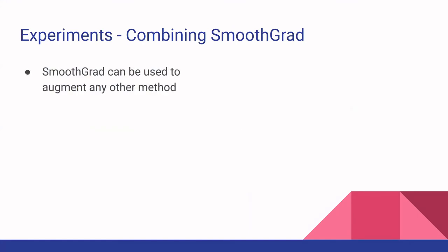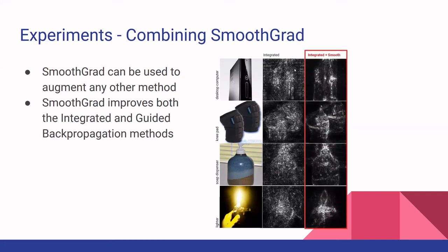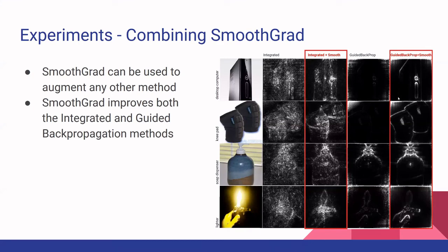They also proposed combining their method with other methods as a type of augmentation. Using images of a desktop, knee pads, soap dispenser, and lighter — the first two with uniform backgrounds — integrated alone is noisy, but combining it with SmoothGrad removes the noise around uniform backgrounds and clearly reveals the desktop computer, knee pads, soap dispenser, and lighter. For guided backpropagation, the first two uniform background images are barely visible, but combining with SmoothGrad turns them into edge maps and also enhances the non-uniform images.